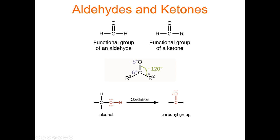Both aldehydes and ketones have sp2 hybridization, so there's a 120-degree bond angle — a trigonal planar geometry. If we take an alcohol and oxidize it, it turns into a carbonyl group. So depending on what kind of alcohol we're oxidizing, we can make aldehydes and ketones in the lab by oxidizing alcohols.